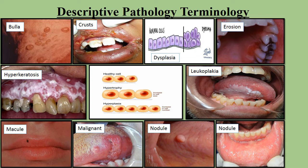The report includes: what is the lesion, location, color, size, texture, and so on. Among these terms — first, a bulla is a blister: unelevated, circumscribed, fluid-contained lesion.